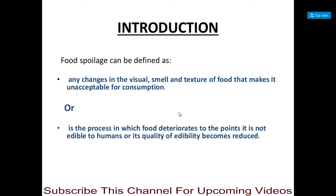Let's start about food spoilage and some common types of food spoilage. Food spoilage can be defined as any changes in the visual appearance, smell, and texture of food that makes it unacceptable for human consumption. Or food spoilage can be defined as the process in which food deteriorates to the point it is not edible to humans, or its quality of edibility becomes reduced.